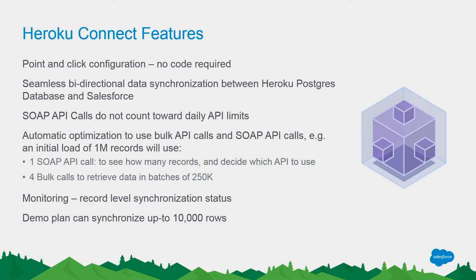Heroku Connect also provides seamless bi-directional synchronization. You have options — unidirectional from Salesforce to the external database, or bi-directional where data is automatically synchronized back to your Salesforce instance. A very key point: the SOAP API calls from Heroku Connect do not count towards the API limits. With a lot of ETL tools and manually created data synchronization methods, we still utilize API calls. But when we use Heroku Connect, Salesforce gives us a feature where those API calls don't count toward that limit, so we can take that headache off our minds.